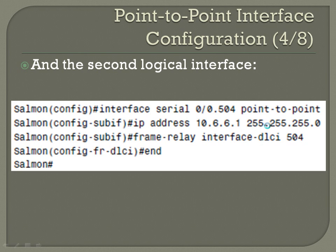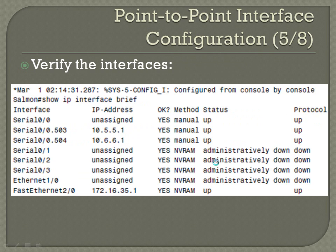Once done, verify the interfaces again with show IP interface brief. You can see the physical interface is up/up, and you've also got your two logical sub-interfaces — .503 and .504 — with their IP addresses, and they are also up.